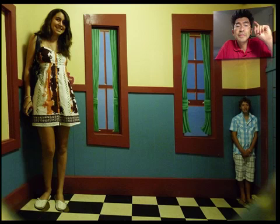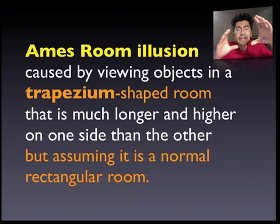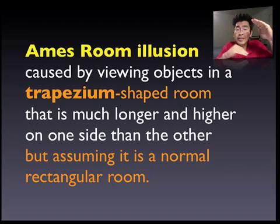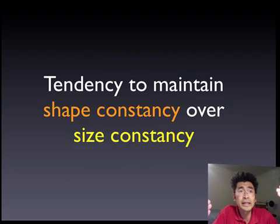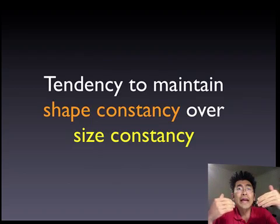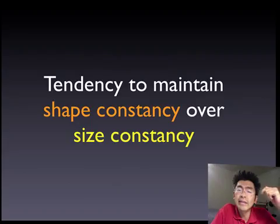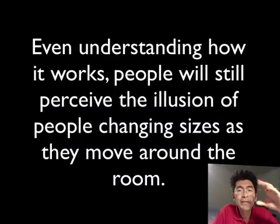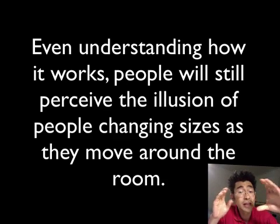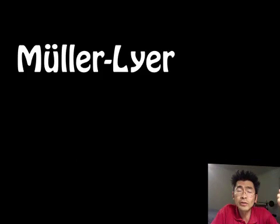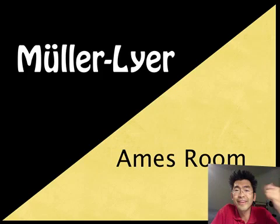The Ames Room is based on viewing objects in a trapezoid-shaped room that is much longer and higher on one side than the other, but assuming it is a normal rectangular room. This demonstrates our tendency to maintain shape constancy over size constancy, and therefore shows our inability to maintain size constancy when our depth cues are being misled. This illusion continues to work even when we understand it — people will still perceive the illusion of people changing sizes as they move around the room.